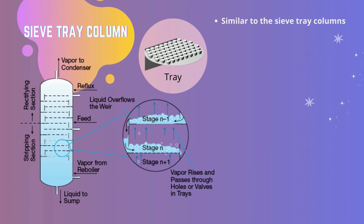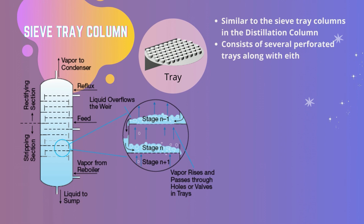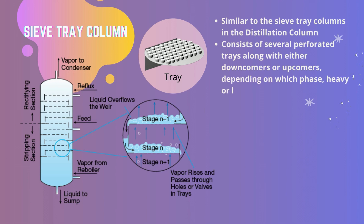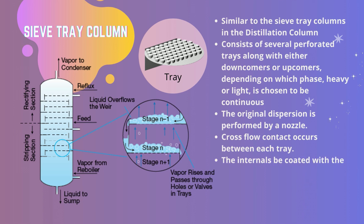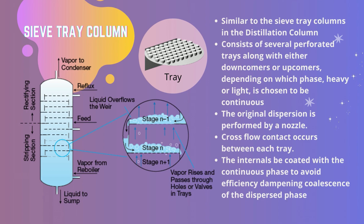Sieve tray liquid-liquid extractors are similar to sieve tray columns in distillation. The column consists of several perforated trays along with either downcomers or upcomers, depending on which phase — heavy or light — is chosen to be continuous. The original dispersion is performed by a nozzle and cross-flow contact occurs between each tray. Sieve tray columns are stage-wise contactors due to coalescence of the dispersed phase between trays and its redistribution through the perforations. It is important that the internals be coated with the continuous phase to avoid dampening coalescence of the dispersed phase. Droplets will retain their form if the surface is coated with the continuous phase.